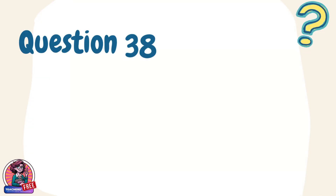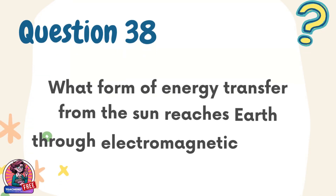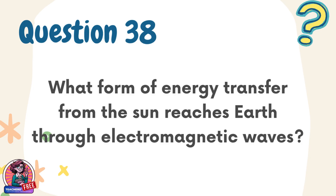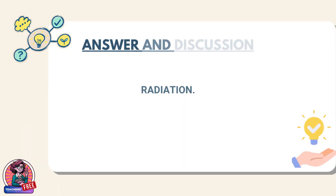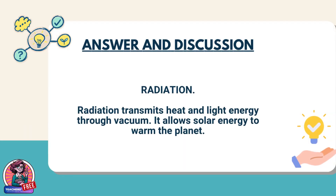Question 38. What form of energy transfer from the Sun reaches Earth through electromagnetic waves? Answer: radiation. Radiation transmits heat and light energy through vacuum. It allows solar energy to warm the planet.